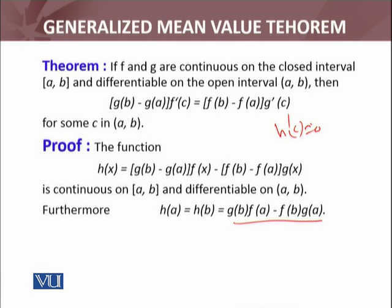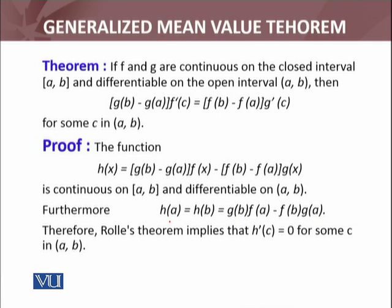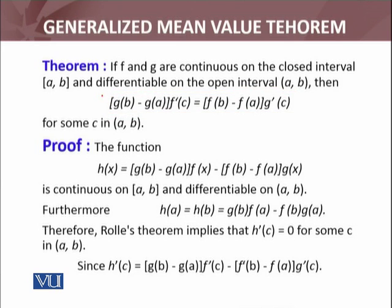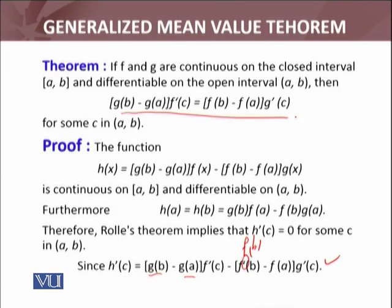So Rolle's theorem will apply to this one. h'(c) equals zero is required. Since h'(c) equals this expression, and these terms are constants (not primed), it is f(b) minus f(a) and g'(c). Since h'(c) equals zero, when we put zero in this equation, we will get this expression.